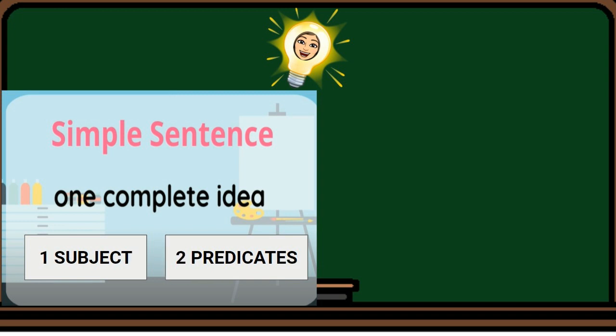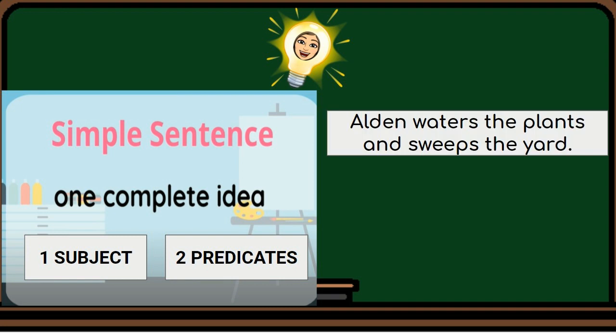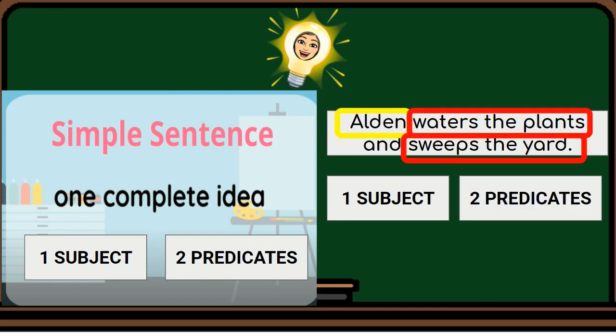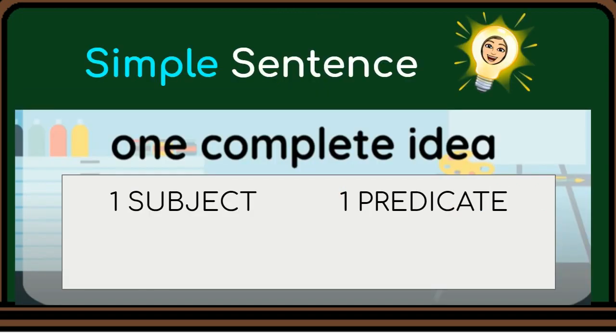A simple sentence can also have one subject and two predicates. For example: Alden waters the plants and sweeps the yard. Here, Alden is the one subject, while waters the plants and sweeps the yard are the two predicates.